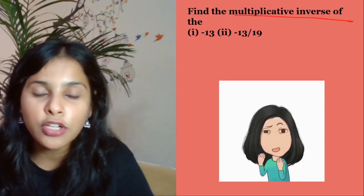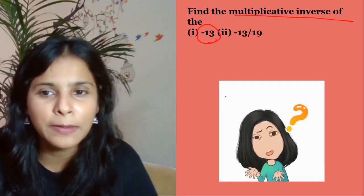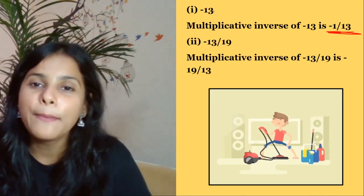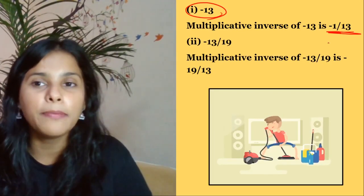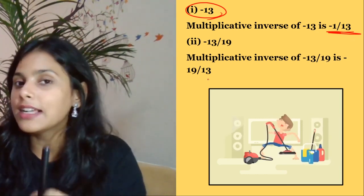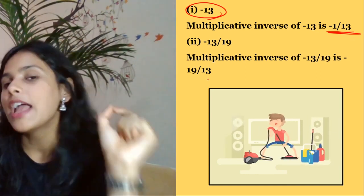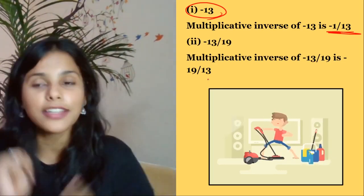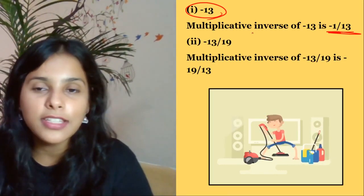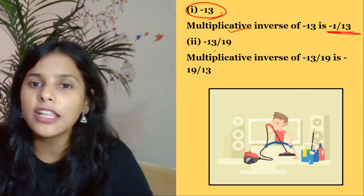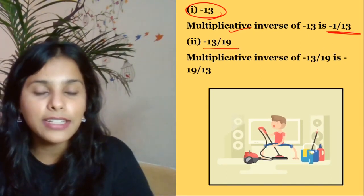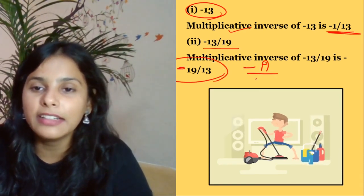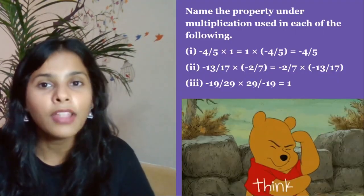Next question: find the multiplicative inverse of -13. Just take the reciprocal — so -13 gives -1/13. Just as additive inverse means sign change, multiplicative inverse means reciprocal. So the multiplicative inverse of -13 is -1/13. And for -13/19, take the reciprocal: the answer is -19/13.